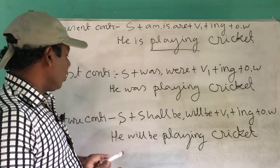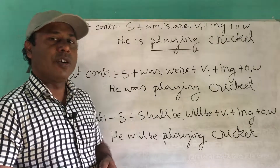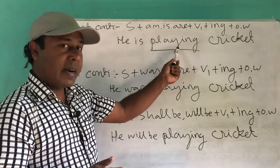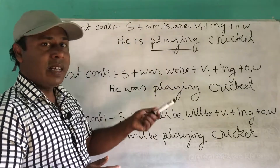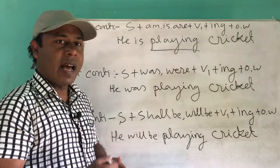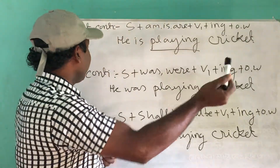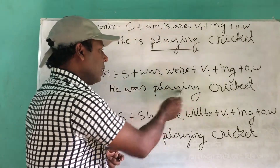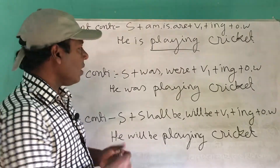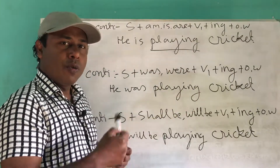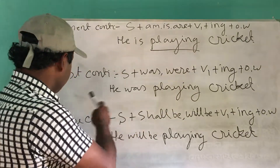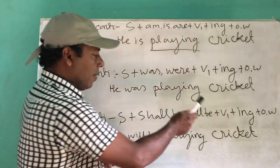So this is the easy way to identify present continuous, past continuous, and future continuous tense. Present participle word with am/is/are is present continuous: 'He is playing cricket, I am playing cricket, they are playing cricket.' Present participle word with was/were is past continuous: 'He was playing cricket, we were playing cricket, they were playing cricket.'